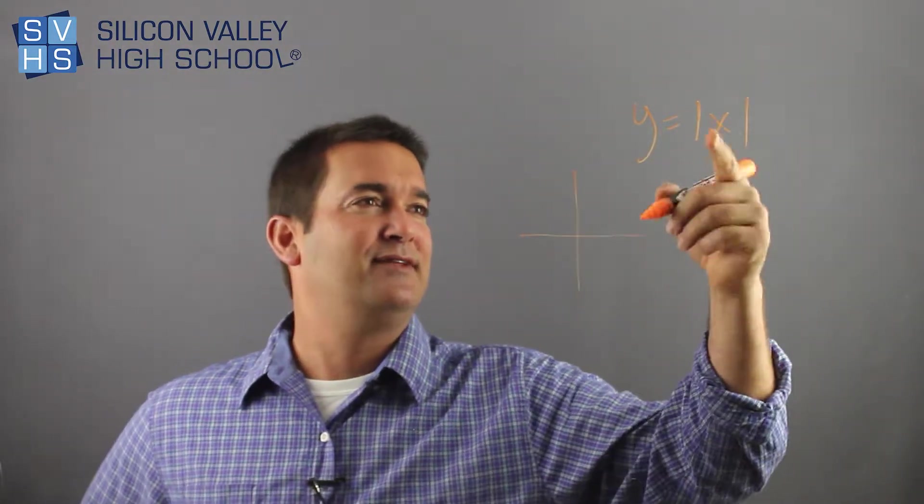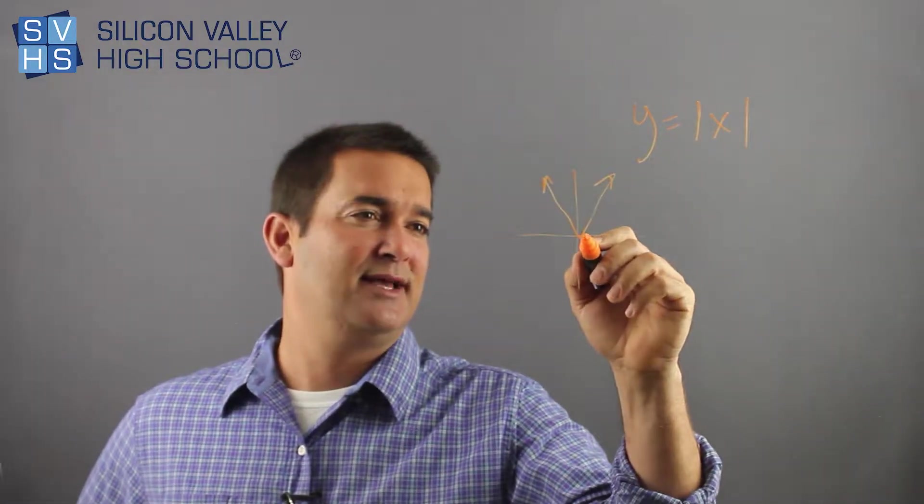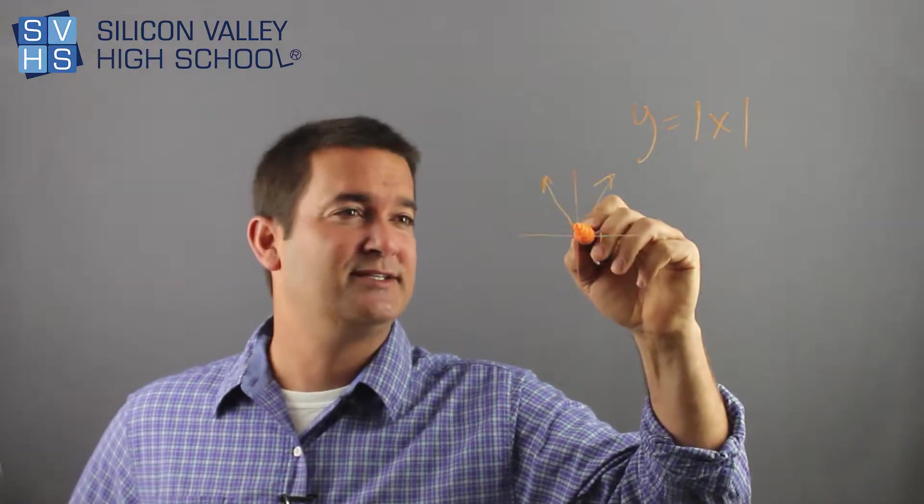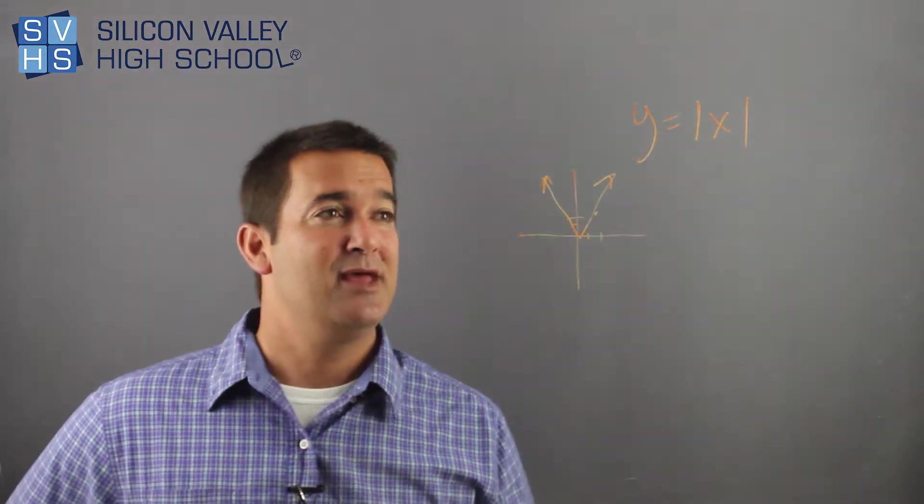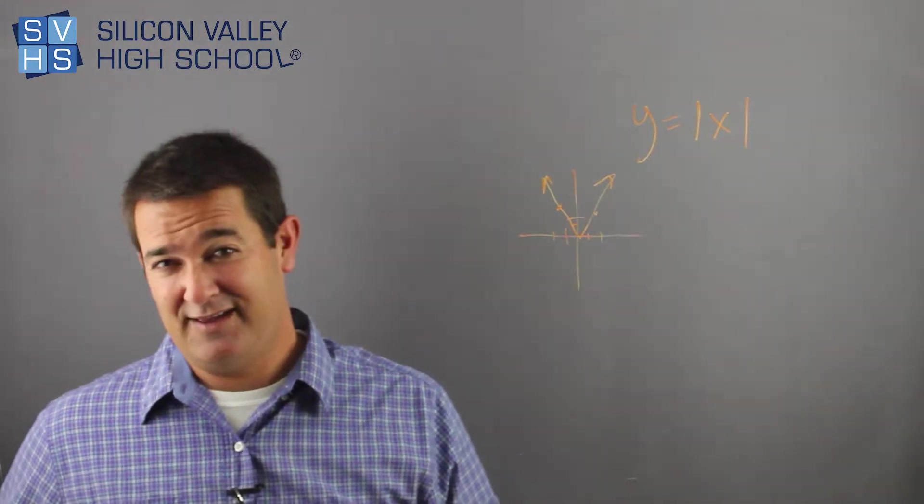So if you graphed this right here, it would essentially look just like this, which makes sense. If I plugged in 2, I would get absolute value of 2 is up 2. But if I plugged in negative 2, it still comes out to a positive 2. So you get this V.